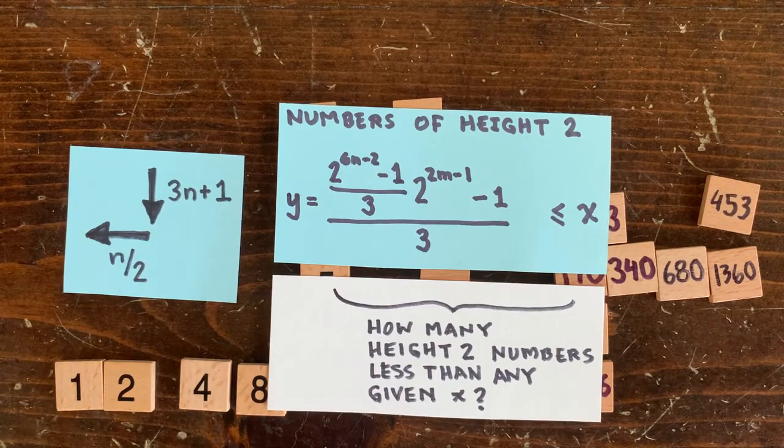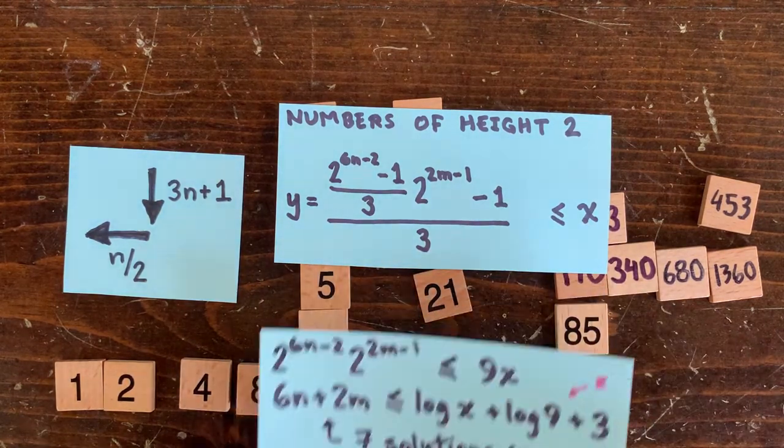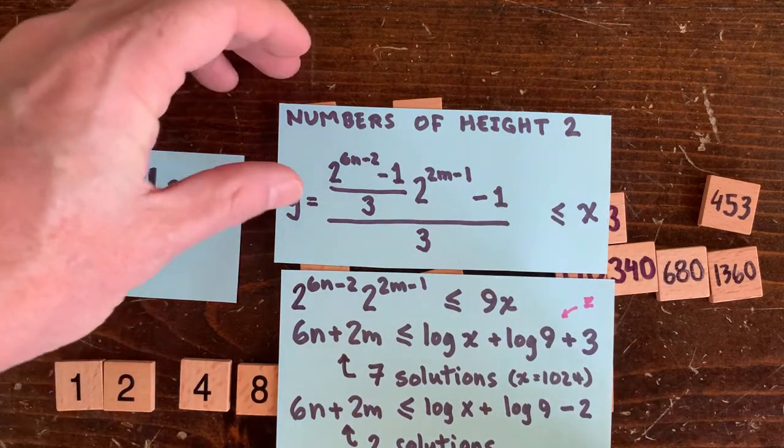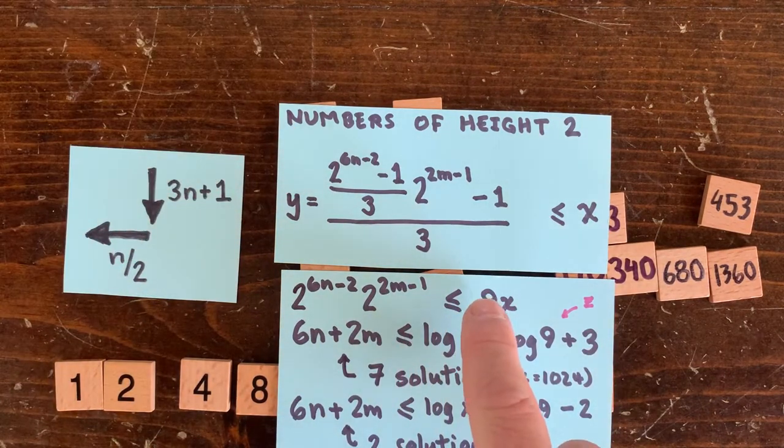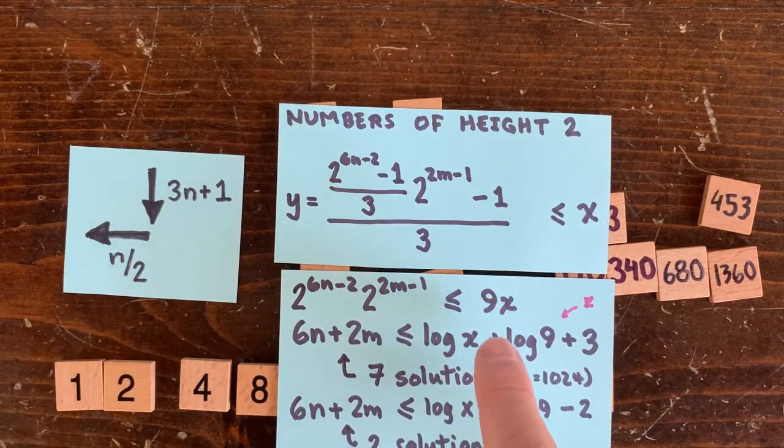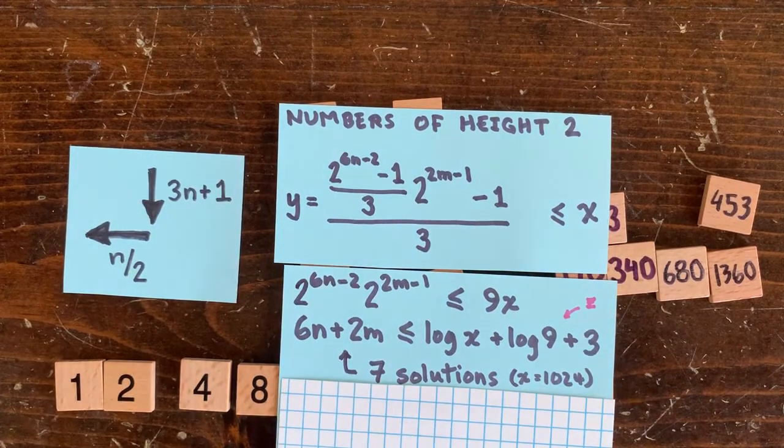How many of those height 2 numbers are less than or equal to x? Well, let's rearrange some terms and simplify, get rid of the little minus 1 and plus 3. And we get 6n plus 2m is less than this.